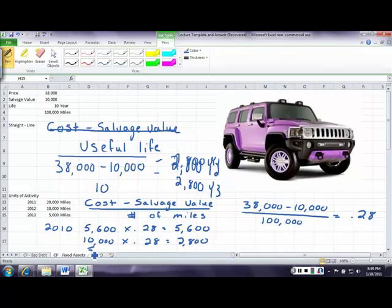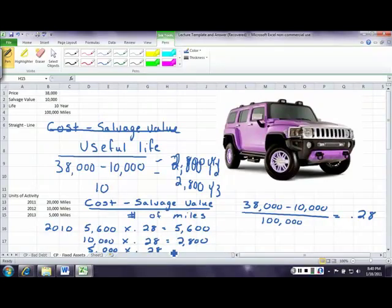Then we're going to take the next set of miles times 28 cents, and we're going to get $2,800. And then finally, we're going to take 5,000 miles times 28 cents, and this is going to give us $1,400. This here should say 20,000.